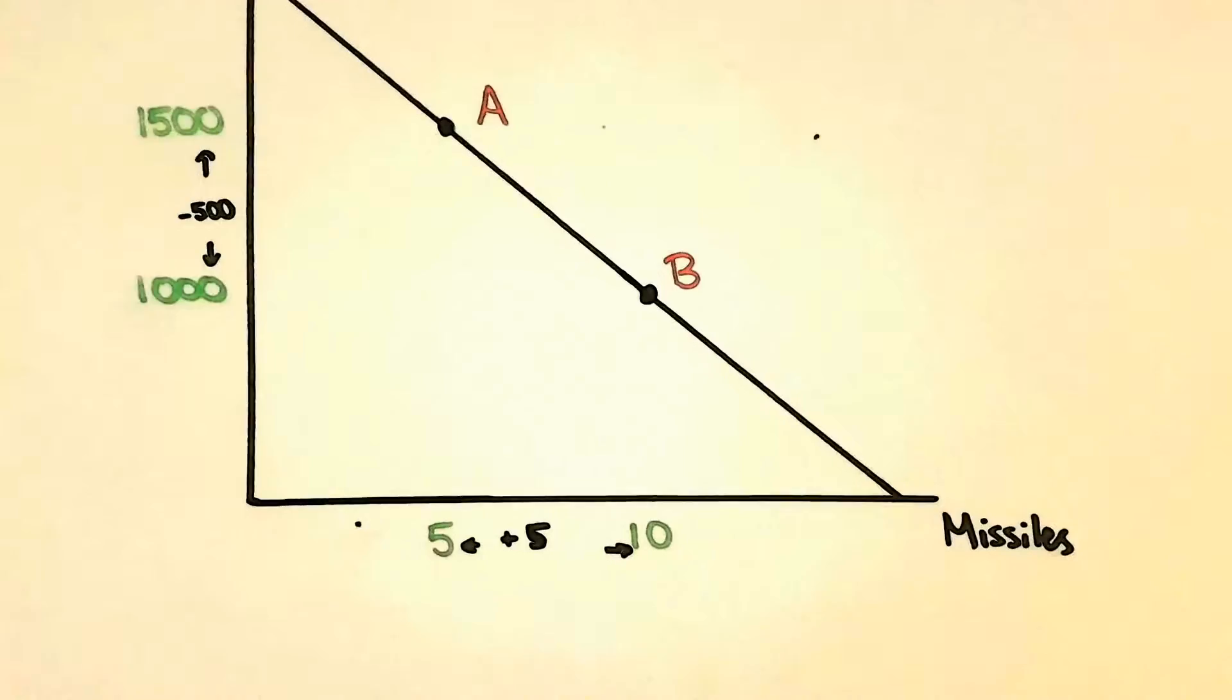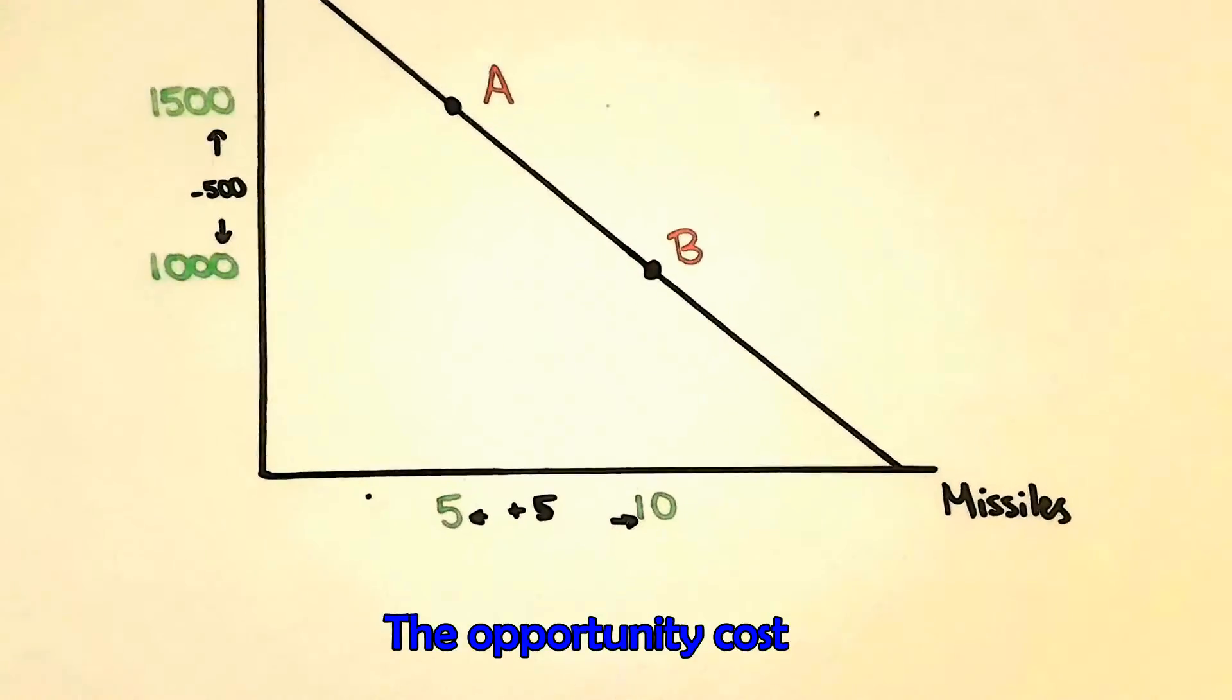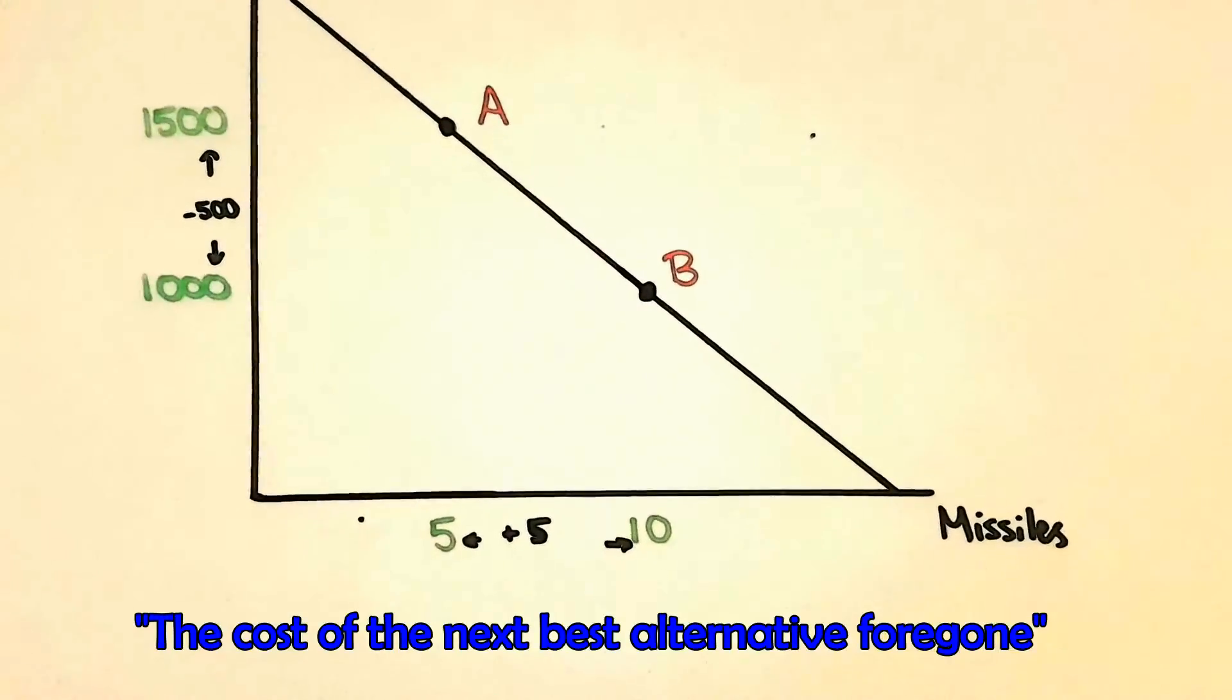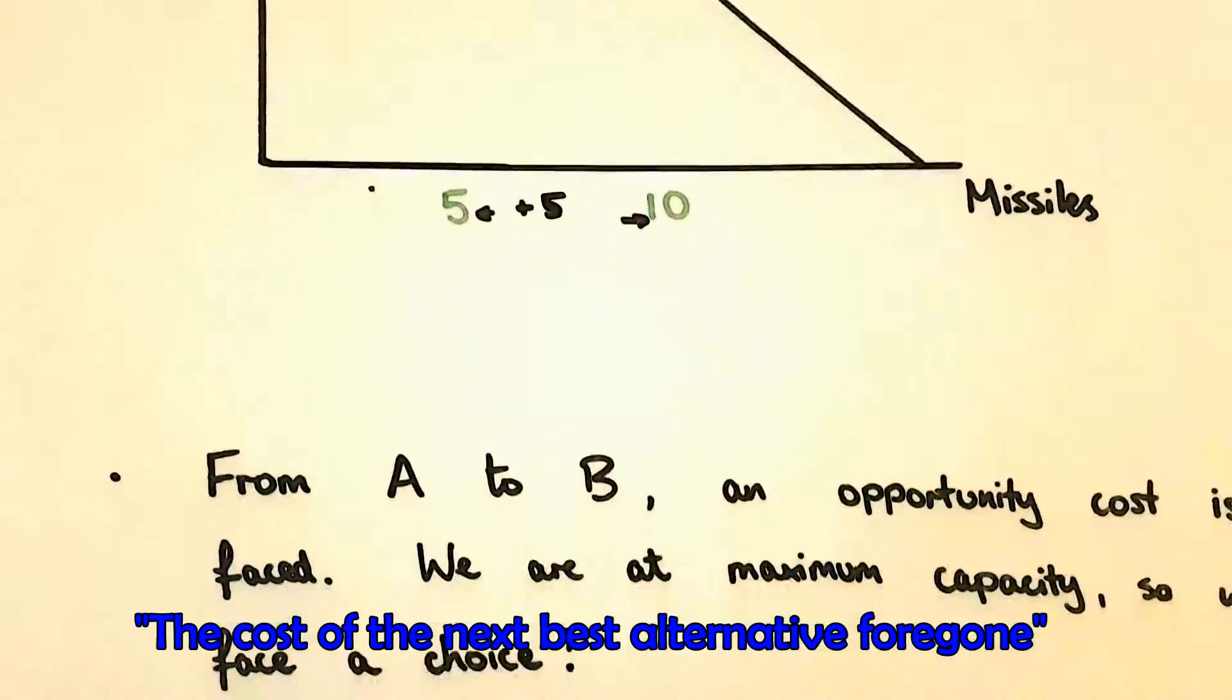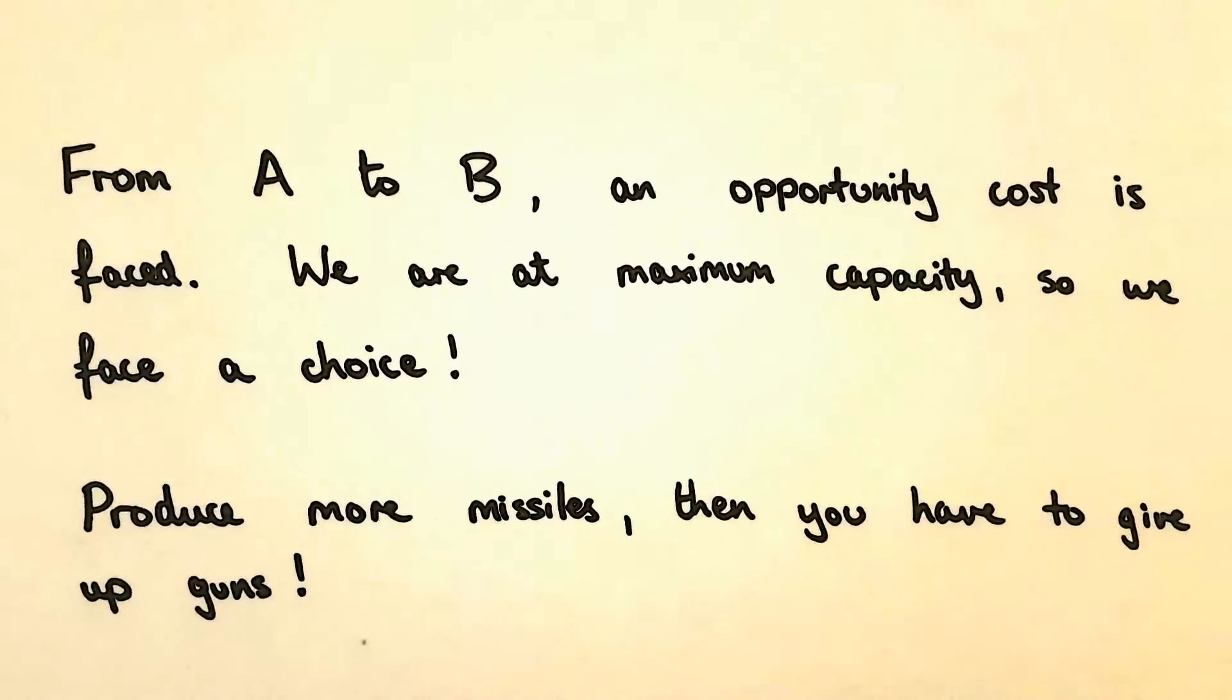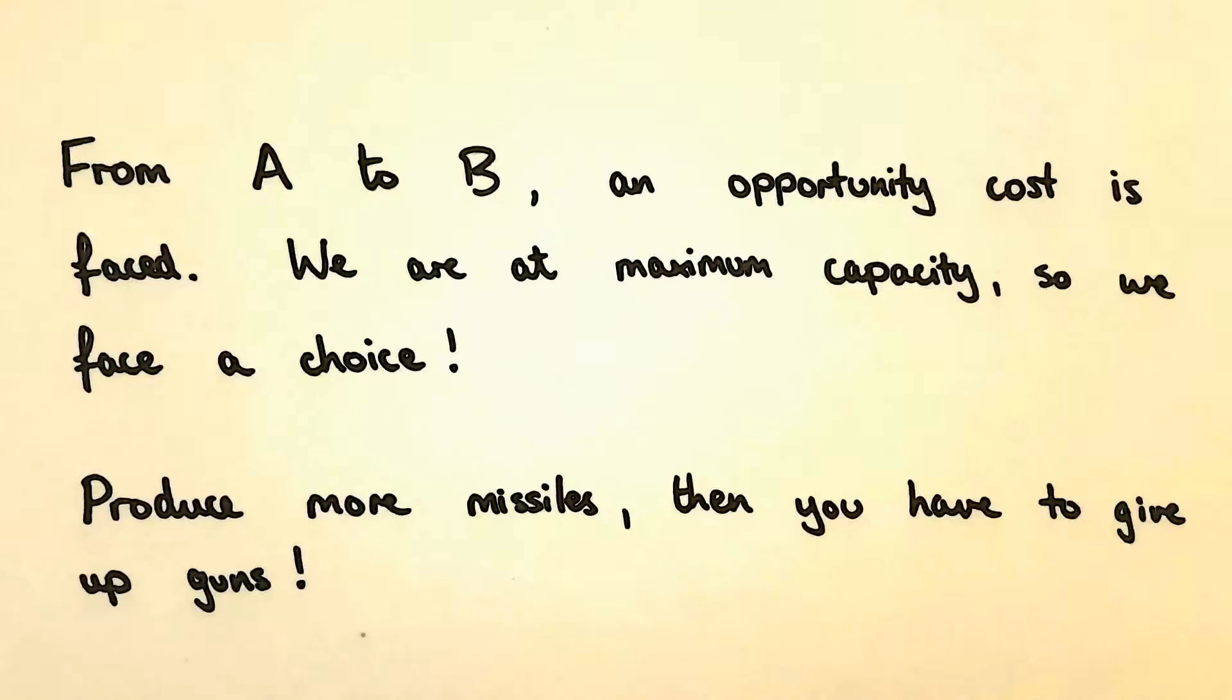This is called the opportunity cost. The opportunity cost is defined as the cost of the next best alternative foregone. Basically if North Korea decide they want to make more missiles it would mean that they have to give up making some guns.